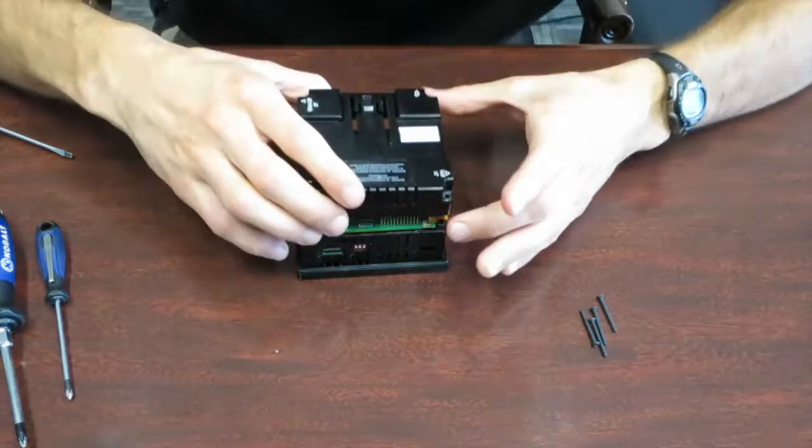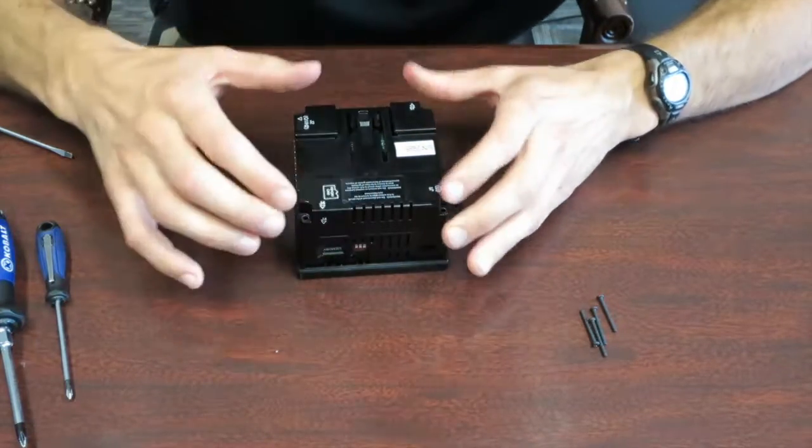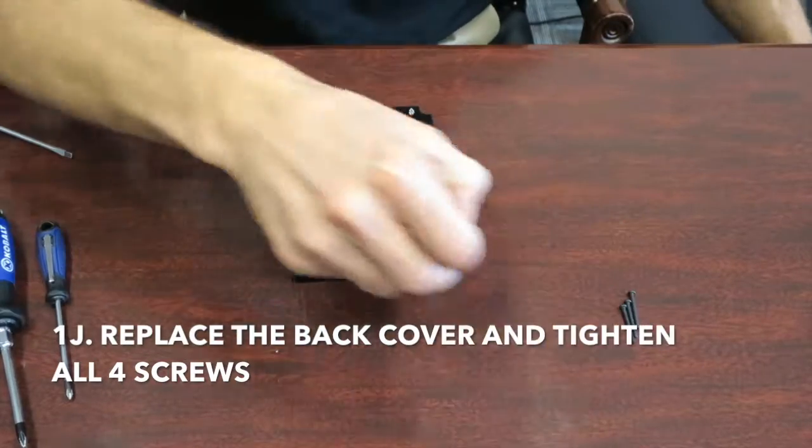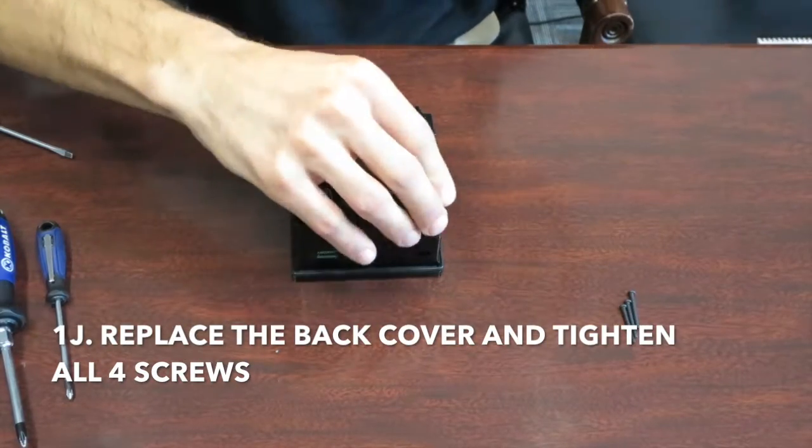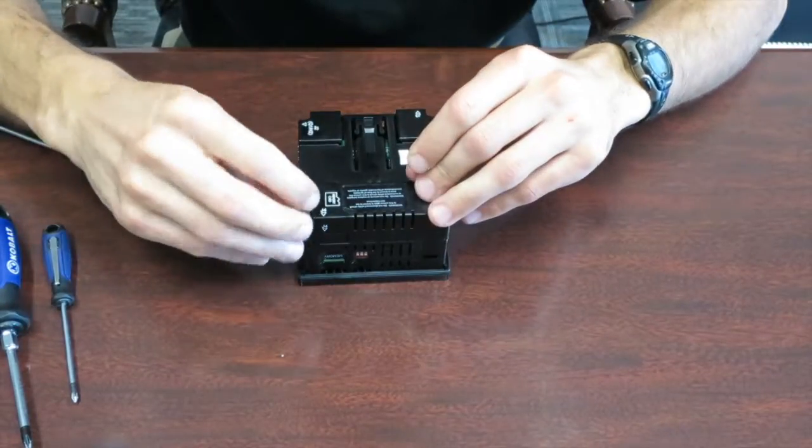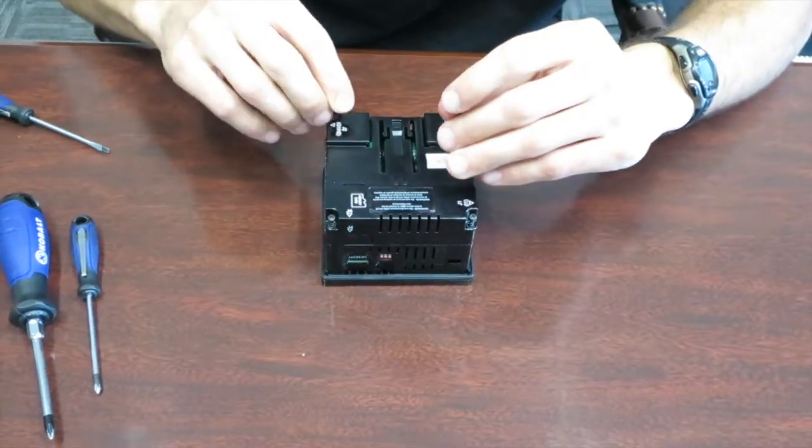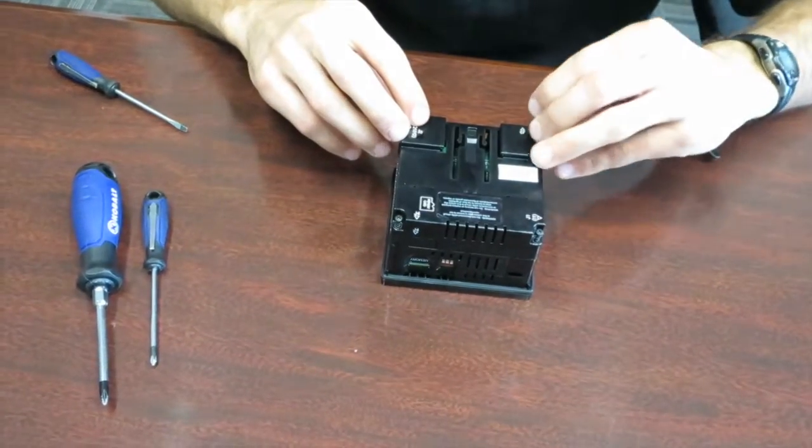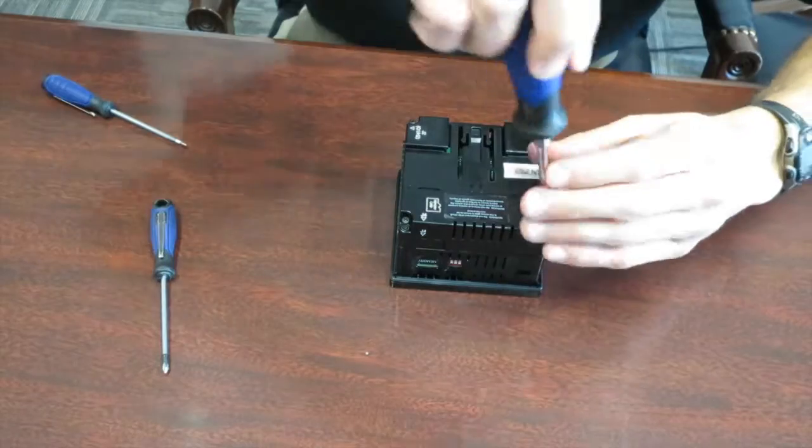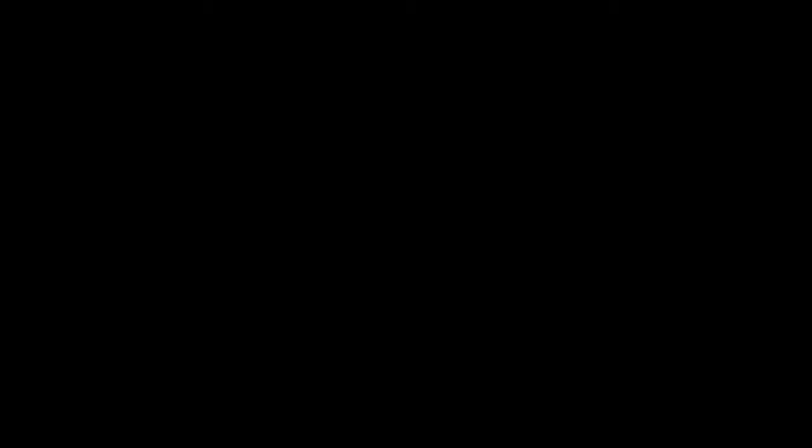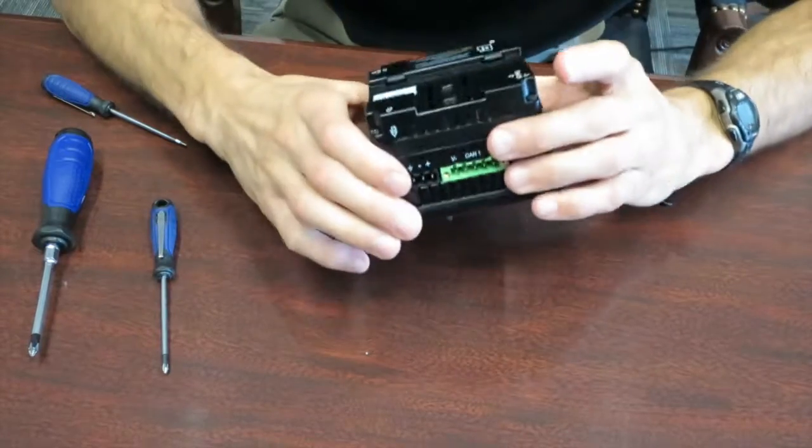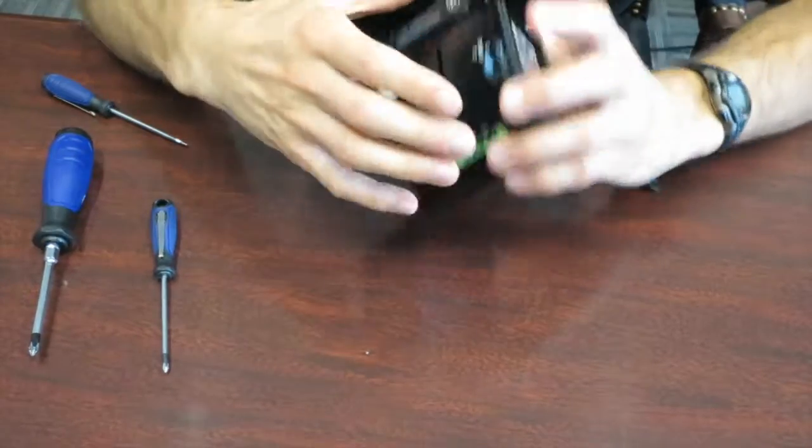Next, you're going to place the back cover back on. You're going to replace the four screws. Tighten those down. Now that the battery is back in place, you're going to reinstall this per the instructions in the manual.